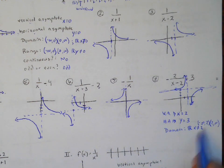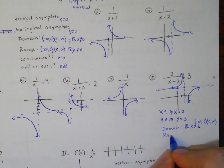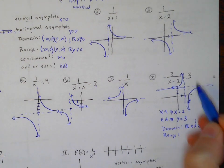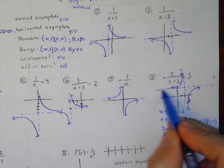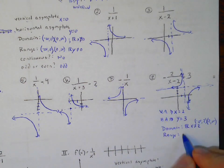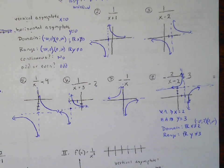Either way of writing the domain is fine. For the range, this keeps going down and this keeps going up, so all y values are included except not at 3 — so all real numbers but y cannot equal 3.